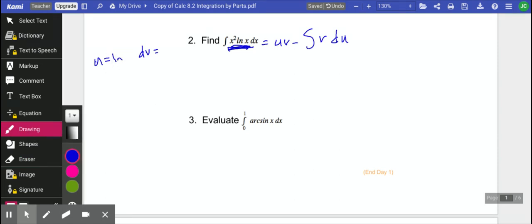Let's pick u to be natural log of x, which is going to make dv x squared dx. All right, so that will make du 1 over x dx. And then that's going to make v 1 third x cubed.